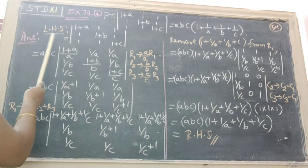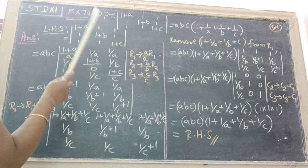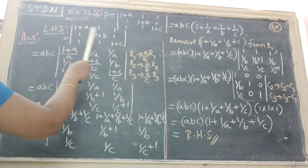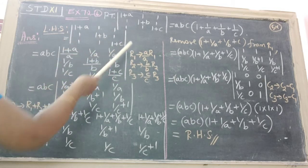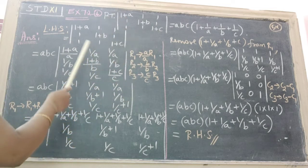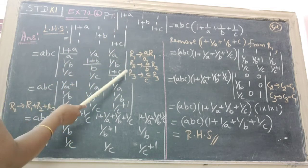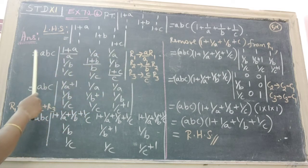First we write down the left-hand side. Next, multiply and divide the first row R1 by A, the second row R2 by B, and the third row R3 by C. Therefore we get equal to ABC.